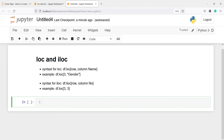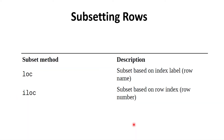LOC and ILOC methods are used in slicing and filtering data according to some conditions. There is only a slight difference between the two methods. They are used for subsetting rows. For LOC, we have to use the index label — we give the column name instead of the column number. In ILOC, the 'I' stands for index, so we have to give the column number instead of the column name.